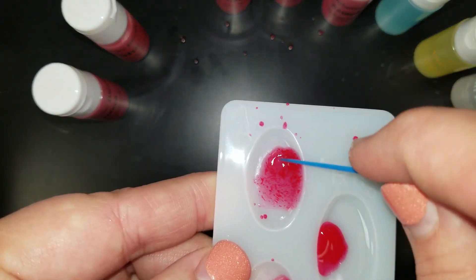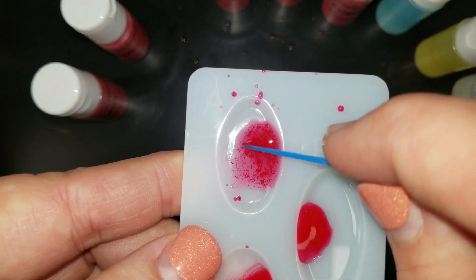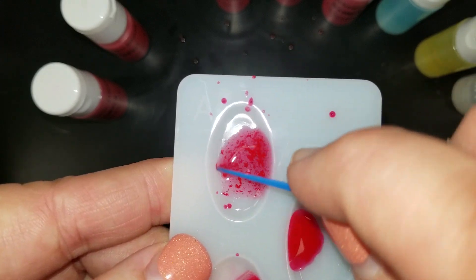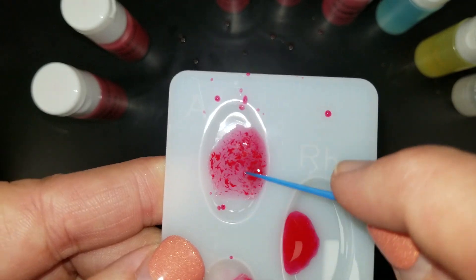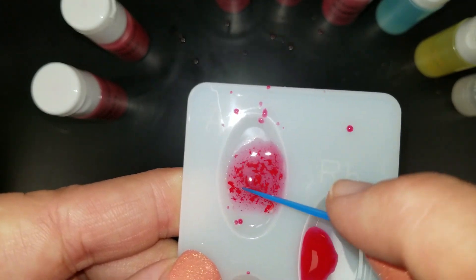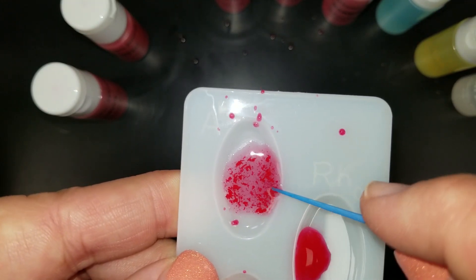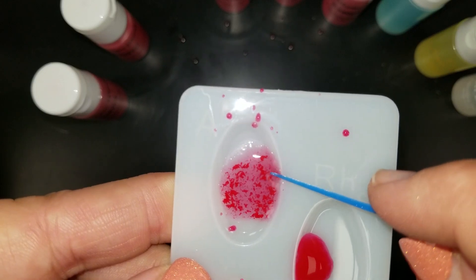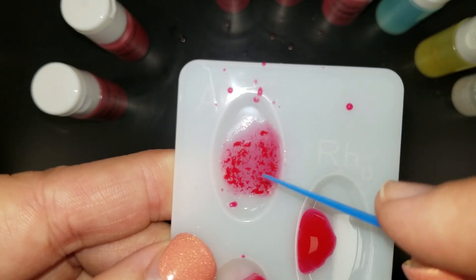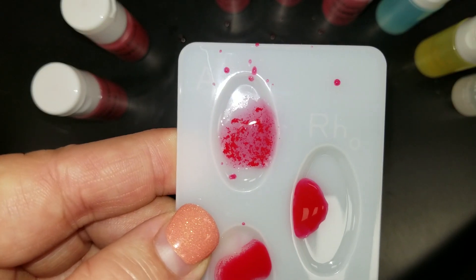And you're just going to mix those together, and you can see how we're getting separation. We're getting little red clumps in that serum. That's a positive reaction, which means that Andrea has the A antigen. This is a positive because they've mixed together.